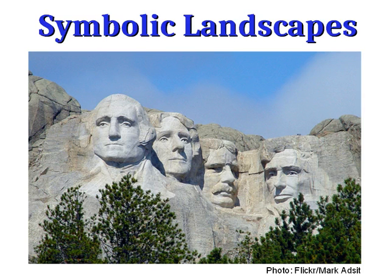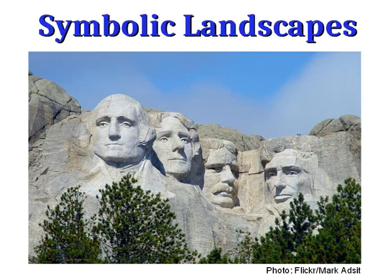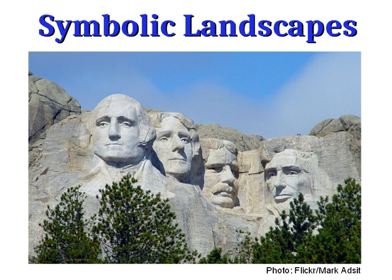To wrap up this lesson, we want to talk about symbolic landscapes. Some symbolic landscapes are deliberately constructed to portray a particular message. A symbolic landscape is one that conveys some sort of meaning to people who see it or interact with it. Mount Rushmore is a famous symbolic landscape deliberately constructed to convey the greatness of the United States and of these four chosen presidents, to convey American national ideals, and to represent the expansion of America into the West, since it's located on a mountainside in South Dakota.